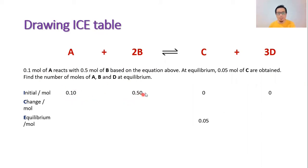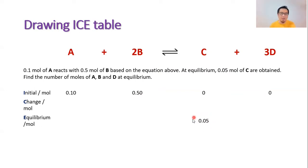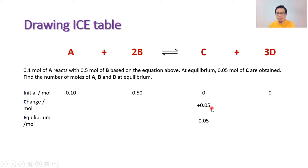The initial number of moles of A is 0.1, and the initial number of moles of B is 0.5. The initial number of moles of C and D will be zero because nothing is mentioned for them in the question. At equilibrium, 0.05 moles of C are obtained, so the equilibrium number of moles for C is 0.05, which I've written in the equilibrium row. This means C has seen an increase in moles of 0.05.